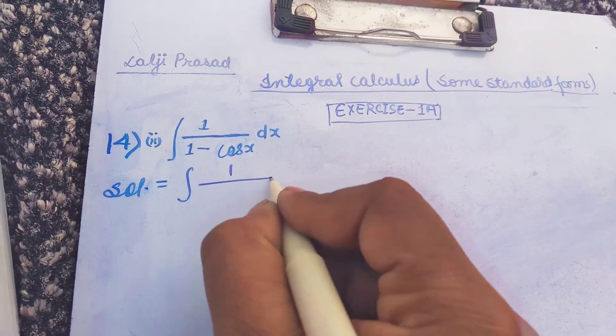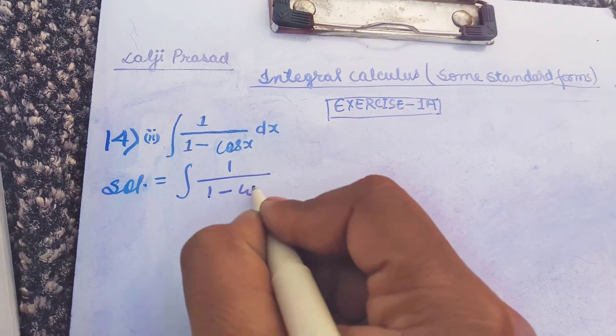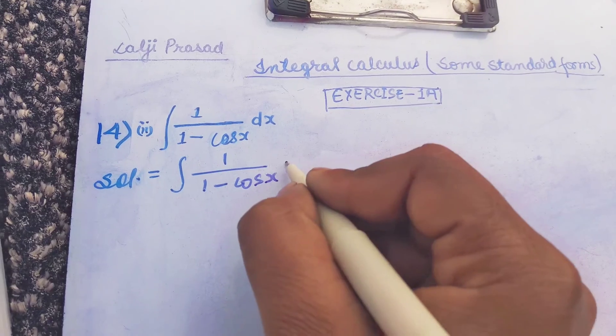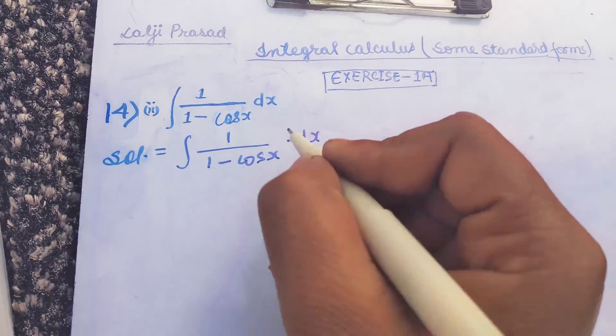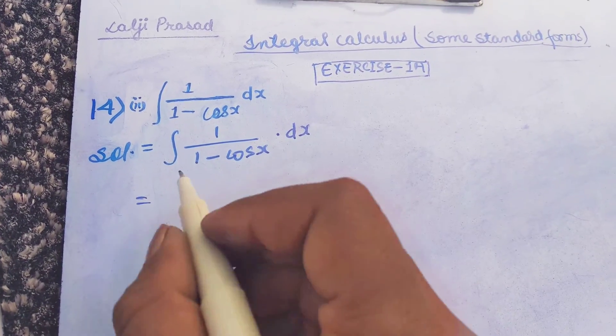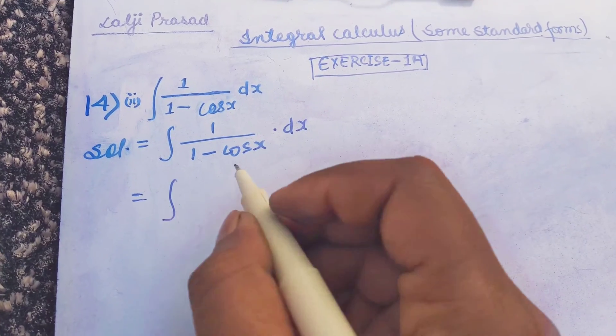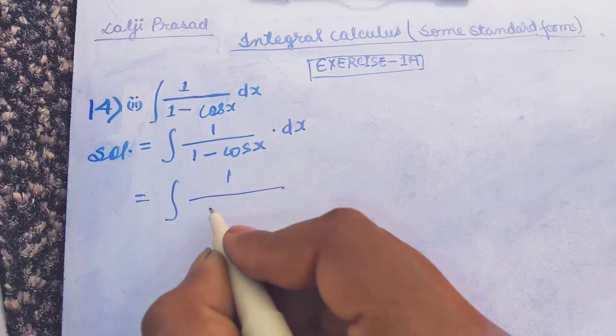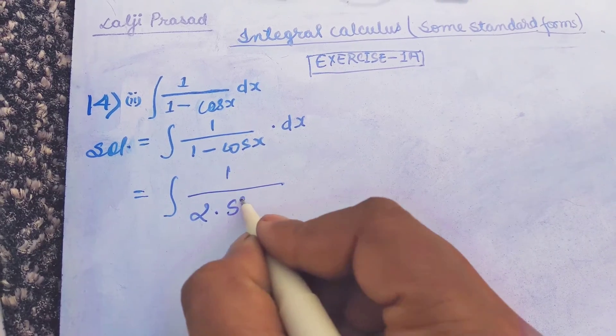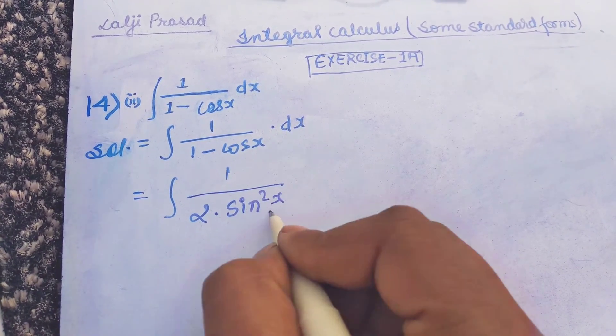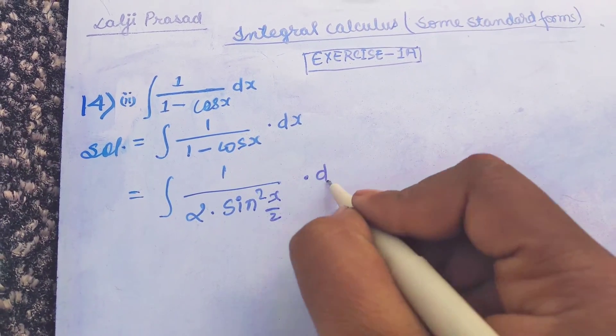Integration of 1 upon 1 minus cos x dx. In the next step it can be written as integration of 1 upon 2 sin squared x upon 2 dx.